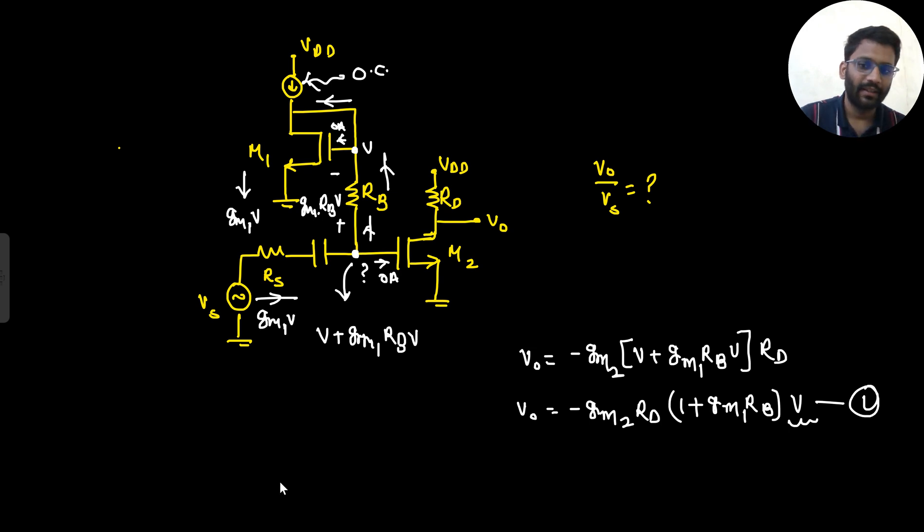So this again the same gmv current has to flow from this Rs resistance as well. So what do we understand from here? That if gmv current is flowing from Rs, it will give a drop of this much.